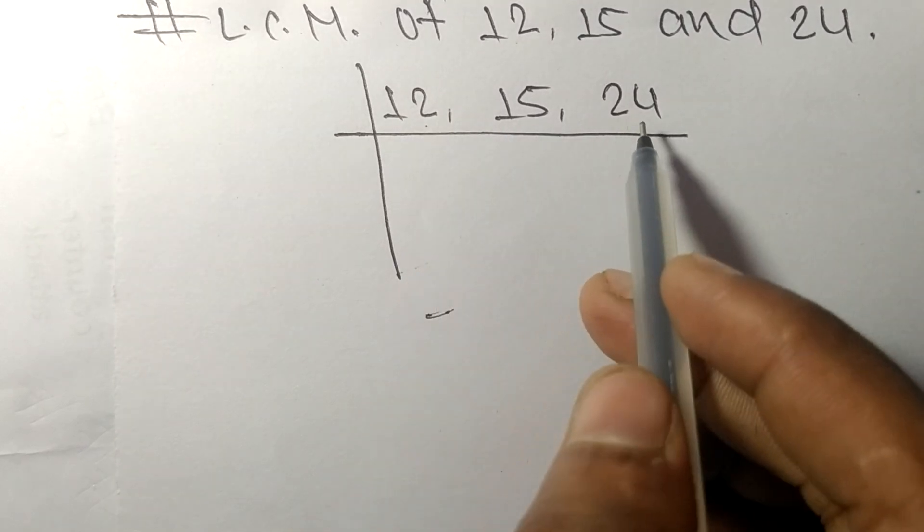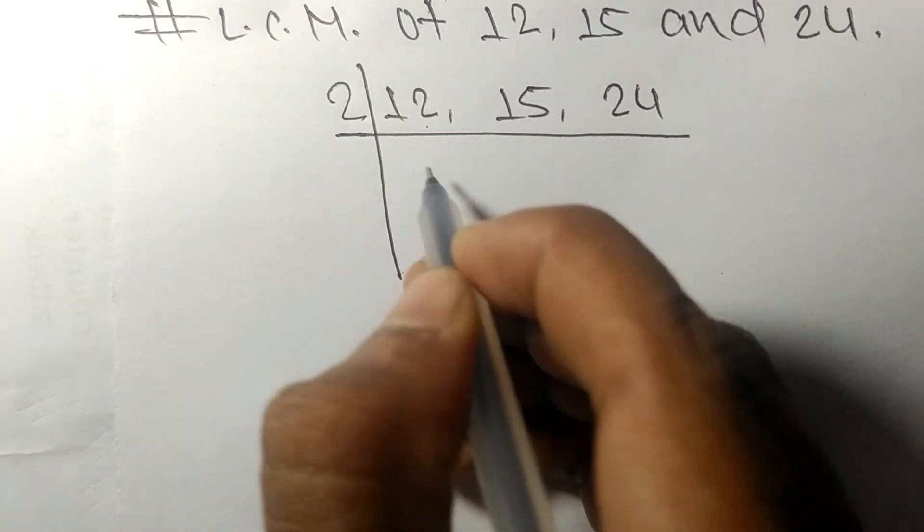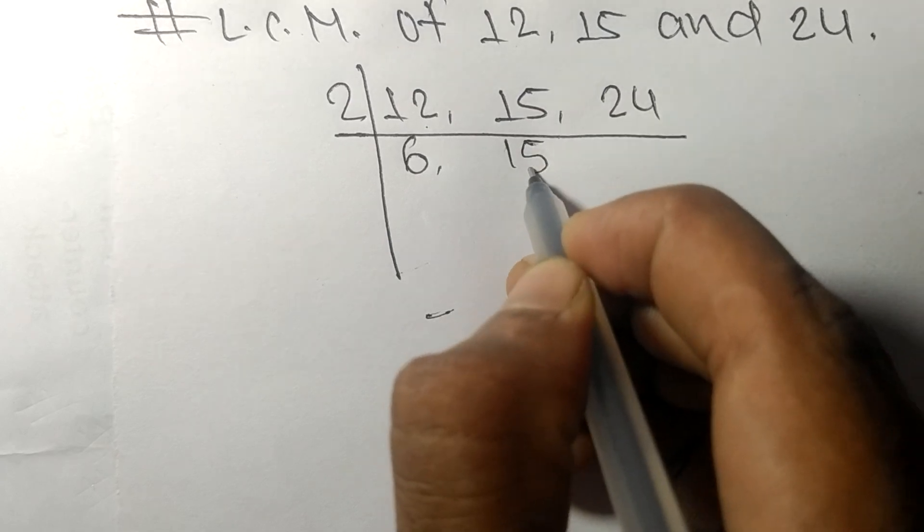So 12 and 24 are exactly divisible by 2. 2 times 6 equals 12, 15 is not divisible so it stays the same, and 2 times 12 equals 24.